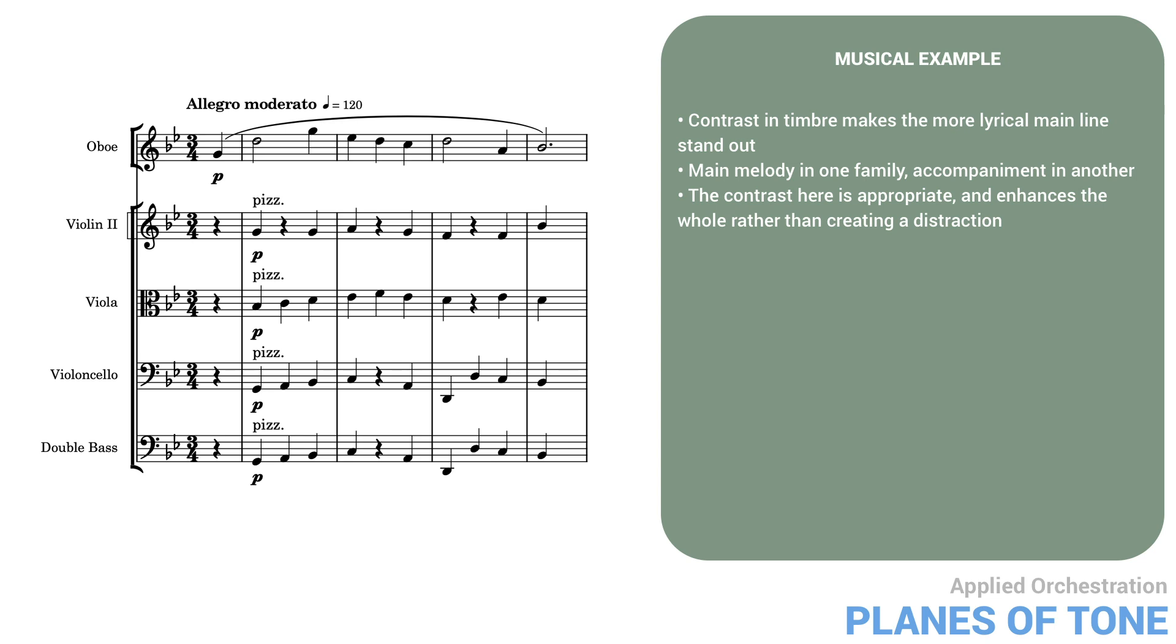There are other possibilities, of course. If the melody, for example, were given to a trumpet or a flute instead of the oboe, the orchestration would still work, but the musical character would be different, more brilliant with the trumpet or more reserved and paler with the flute.